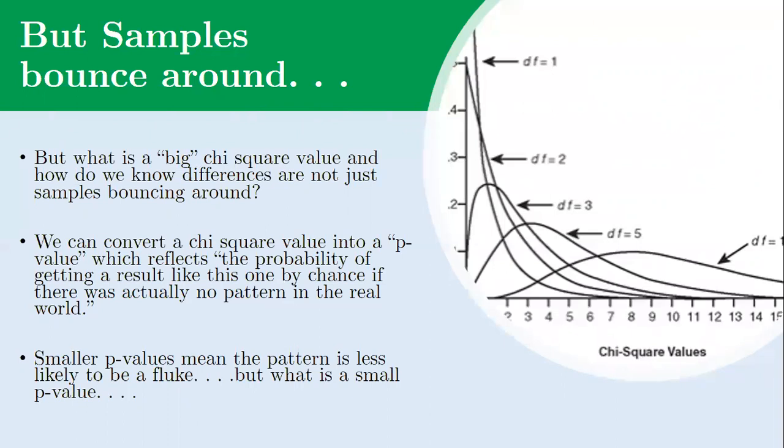The second thing to keep in mind is that samples bounce around. Even if there was nothing going on out there in the world, even if the pattern didn't really exist, if there was no relationship between gender and support for the Iraq war, samples can be off by a little bit. That's just normal. Samples bounce around. How do we know if the bouncing around that we see or the difference we see in our chi-square value, the observed minus the expected, is the result of a real difference or if it's just samples bouncing around?